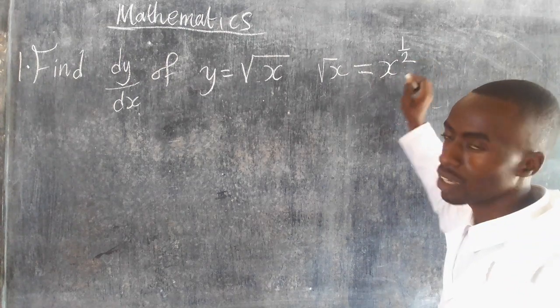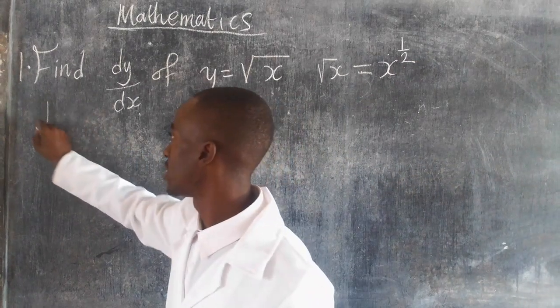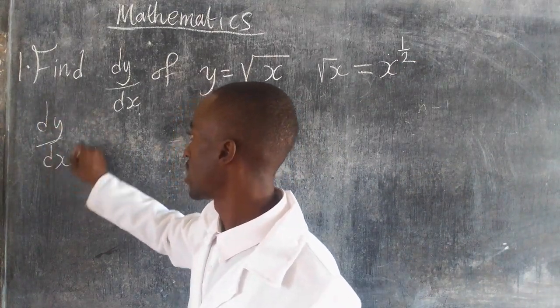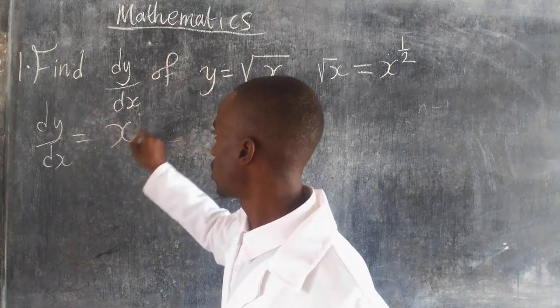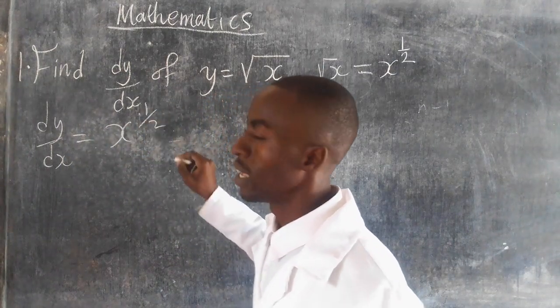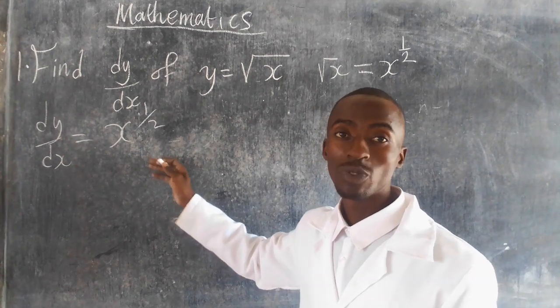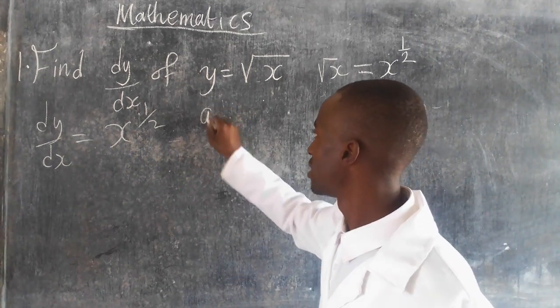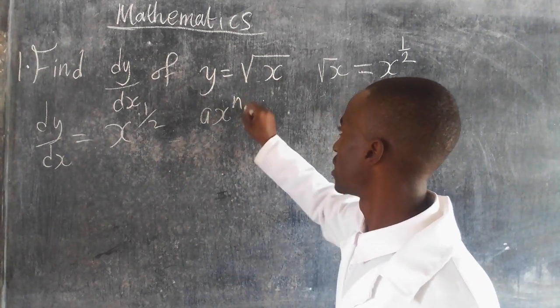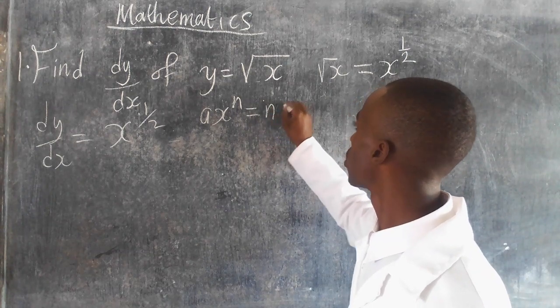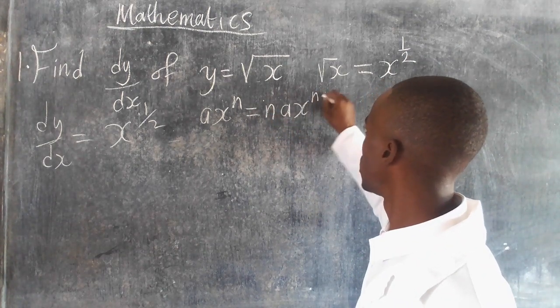Now to find dy over dx, we are going to say this is x to the power 1 over 2. When you have this kind of root expression in this form, you have to compare it to this form.